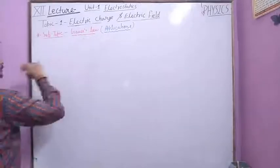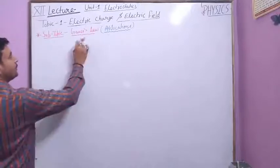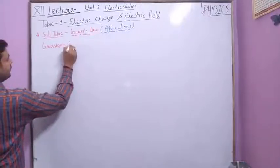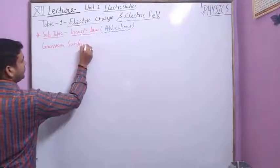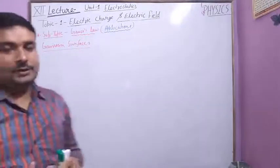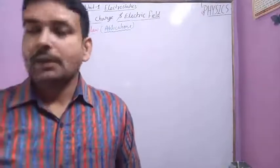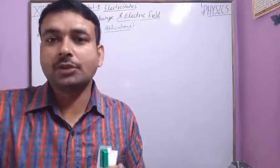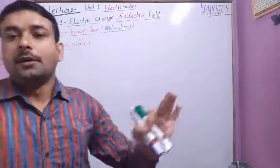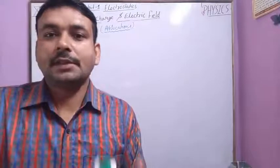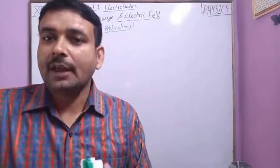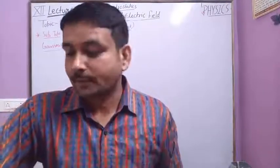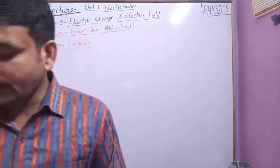The surface for which we can calculate the electric field by using Gauss's law is called a Gaussian surface. The speciality of a Gaussian surface is that the electric field linked through it is equal at every point, and we can also specify the angle between the electric field and the area vector.